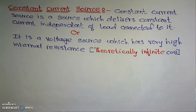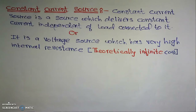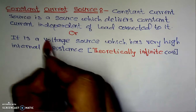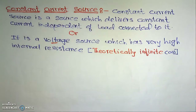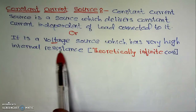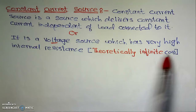Now I will come to the second part: the current source. The constant current source is a source which delivers constant current independent of the load connected to it. Its second definition: it is a voltage source which has very high internal resistance — theoretically infinite.